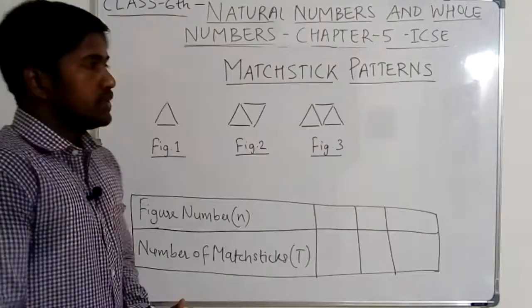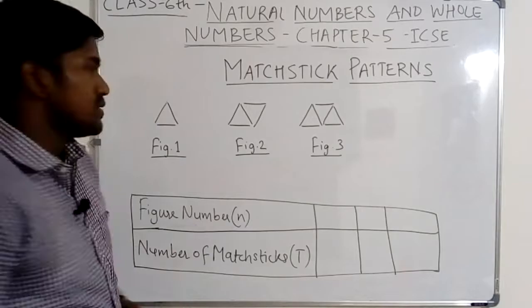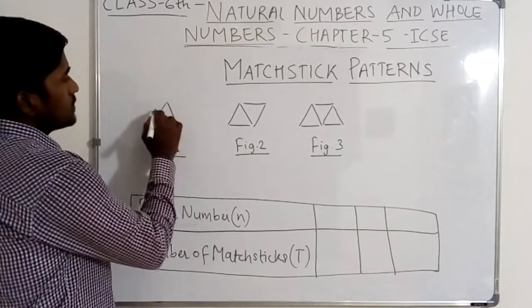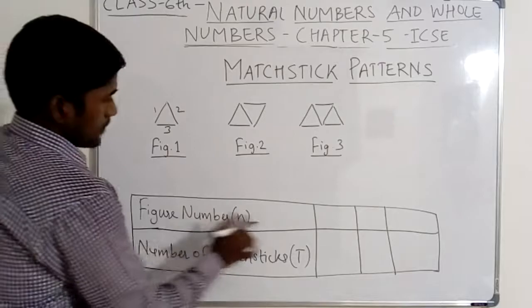Now we will study the mastic pattern by making triangles using mastic. In figure number one, how many mastic are used? One, two, three. Three mastic are used for making one triangle. The figure number is one, and the number of mastic used is three.